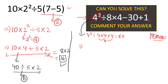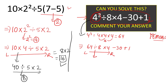So we rewrite the expression as: 64 divided by 8, times 4, minus 30, plus 1. Multiplication and division have the same priority, so we go left to right. 64 divided by 8 gives us 8.